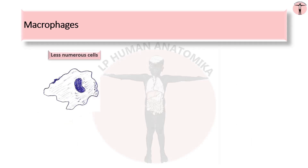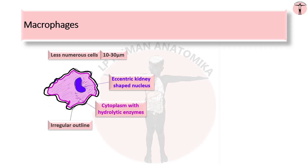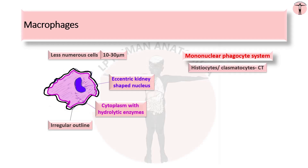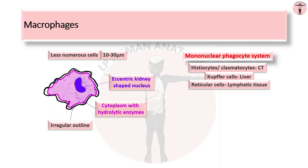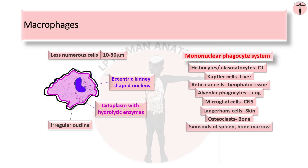The next type of cells is macrophages. Macrophages are less numerous cells. A typical macrophage measures 10 to 30 micrometers in diameter, appears round with an irregular cell outline, an eccentrically placed oval kidney-shaped nucleus, and cytoplasm with numerous lysosomes containing hydrolytic enzymes. They comprise a family of cells called the mononuclear phagocyte system, given different names in different systems: osteocytes or clasmatocytes in connective tissue, Kupffer cells in the liver, reticular cells in lymphatic tissue, alveolar phagocytes in lung alveoli, microglial cells in the central nervous system, Langerhans cells in skin, osteoclasts in bone tissue, and they are also seen in sinusoids of spleen and bone marrow.